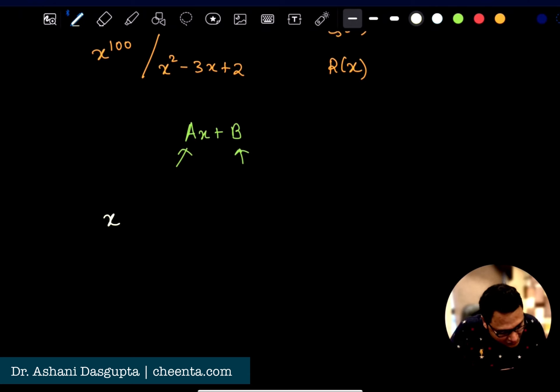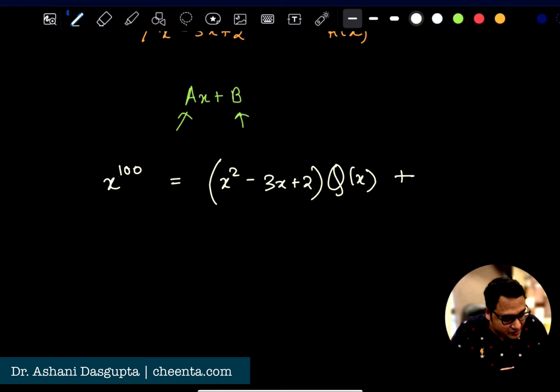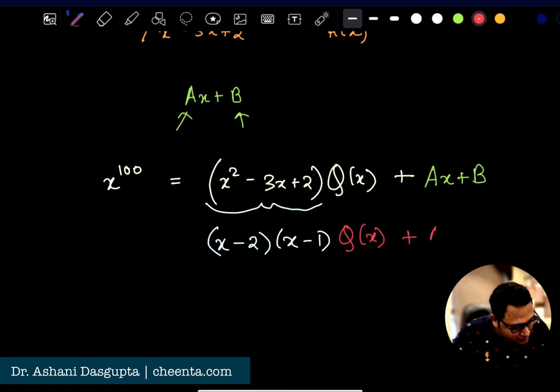We can write x to the power 100 as x squared minus 3x plus 2 times some quotient plus the remainder. Now, the remainder is ax plus b and we want to find out a and b. Notice that we can factorize this as x minus 2 times x minus 1. We have the quotient and we have the remainder, and all of it is equal to x to the power 100.